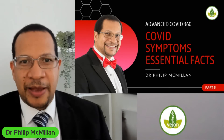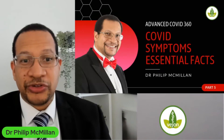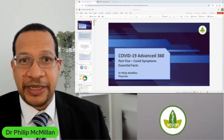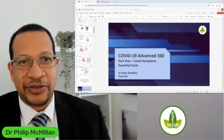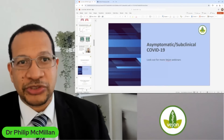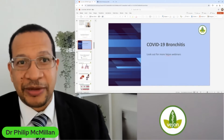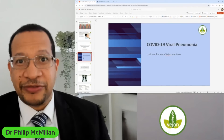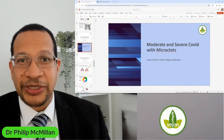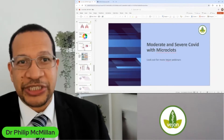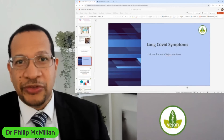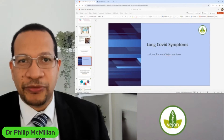So that you have an idea as to what we are doing, I will show you where we are in terms of the sequence. This is what I'll largely be covering today — about six sections, looking at asymptomatic disease. The first part was just an overview, then we have bronchitis with COVID-19, then viral pneumonia, then moderate and severe COVID-19 with microclots, and finally long COVID symptoms.